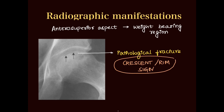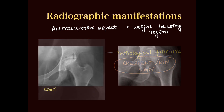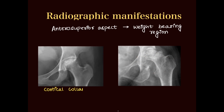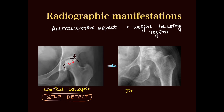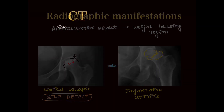In later stages where the head collapses, step defects can occur, and in very advanced stages there will be degenerative arthritic changes in the involved hip. These are the signs on X-ray.